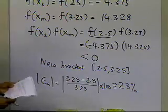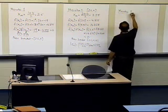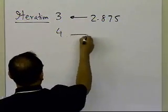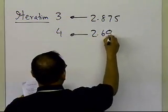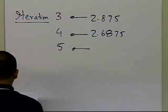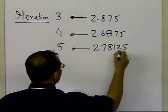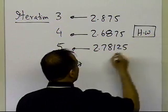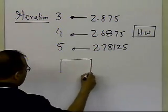I'm going to ask you to do the other iterations yourself. For iteration 3, the value is 2.875; for iteration 4, it's 2.6875; for iteration 5, it's 2.78125. Those are iterations you can do as homework to convince yourself how the new bracket of the root narrows as you go from one iteration to another. That's the end of this segment.